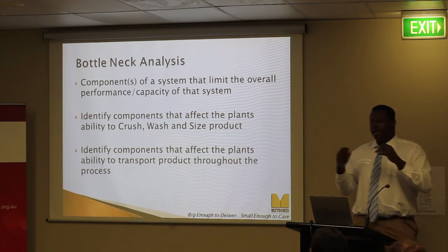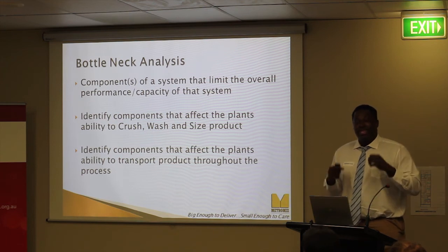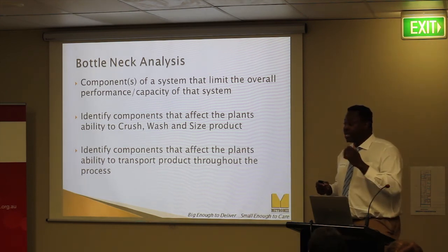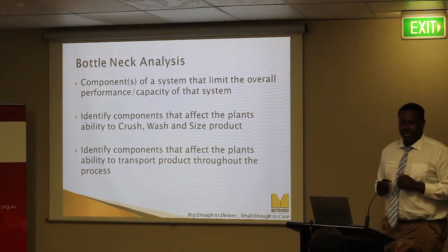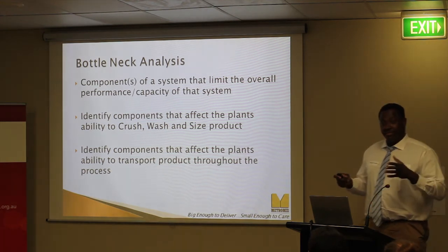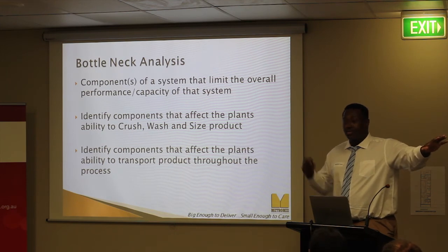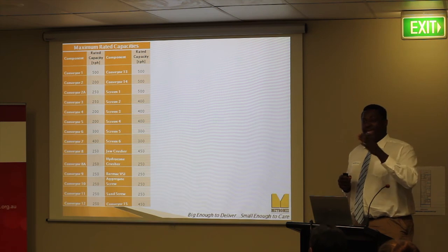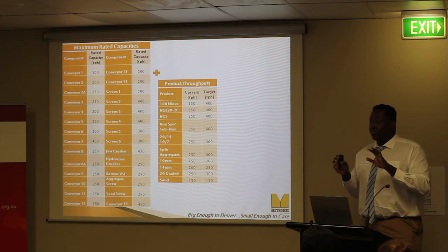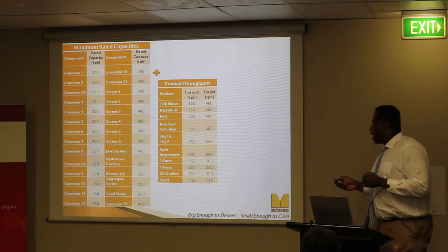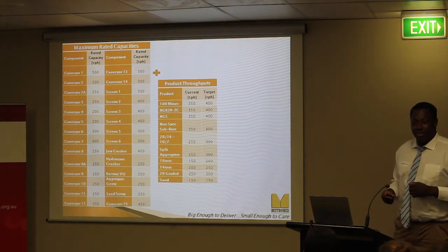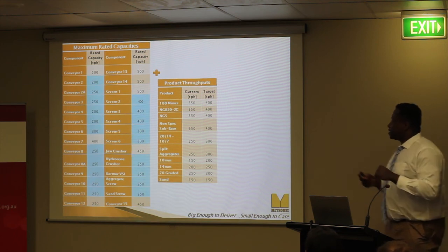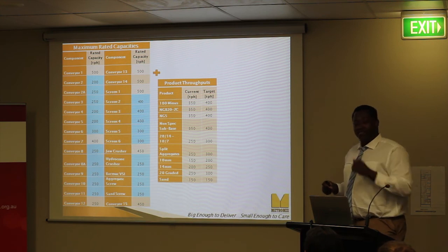So, bottleneck analysis. In this project, I define a bottleneck as any component that affects the system's overall ability to complete its tasks. In this processing plant, it essentially performs three tasks: crushing, washing, and sizing the material. I also looked for components that affected the system's ability to transport material from one process to another. I began by listing all components in the processing plant with their current rated capacities, then listed all the different product modes the plant can be configured to make, along with their target throughputs. These target throughputs would give me about 1 million tonnes per year, and I flagged any components with capacities under the target throughput in blue.